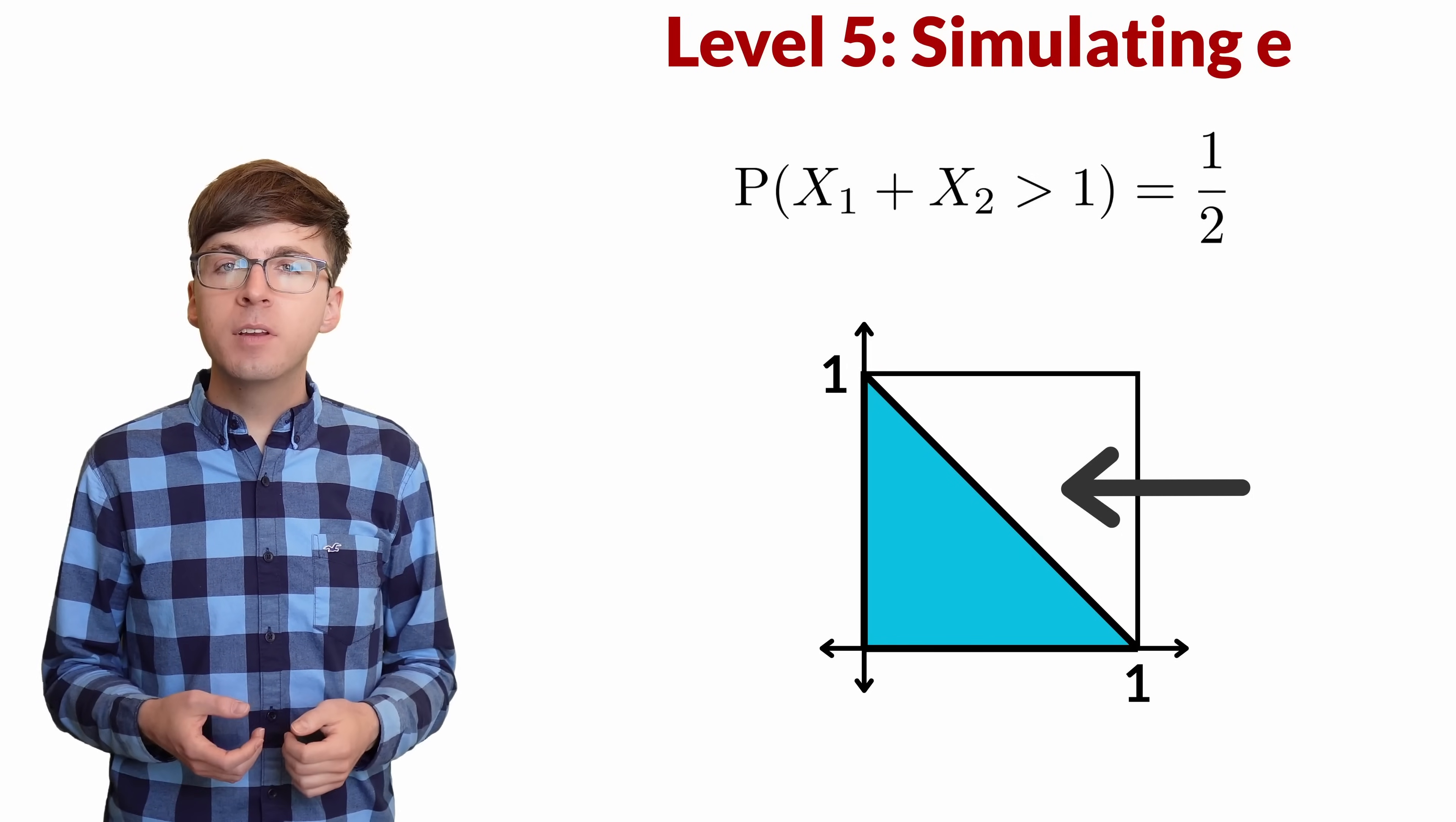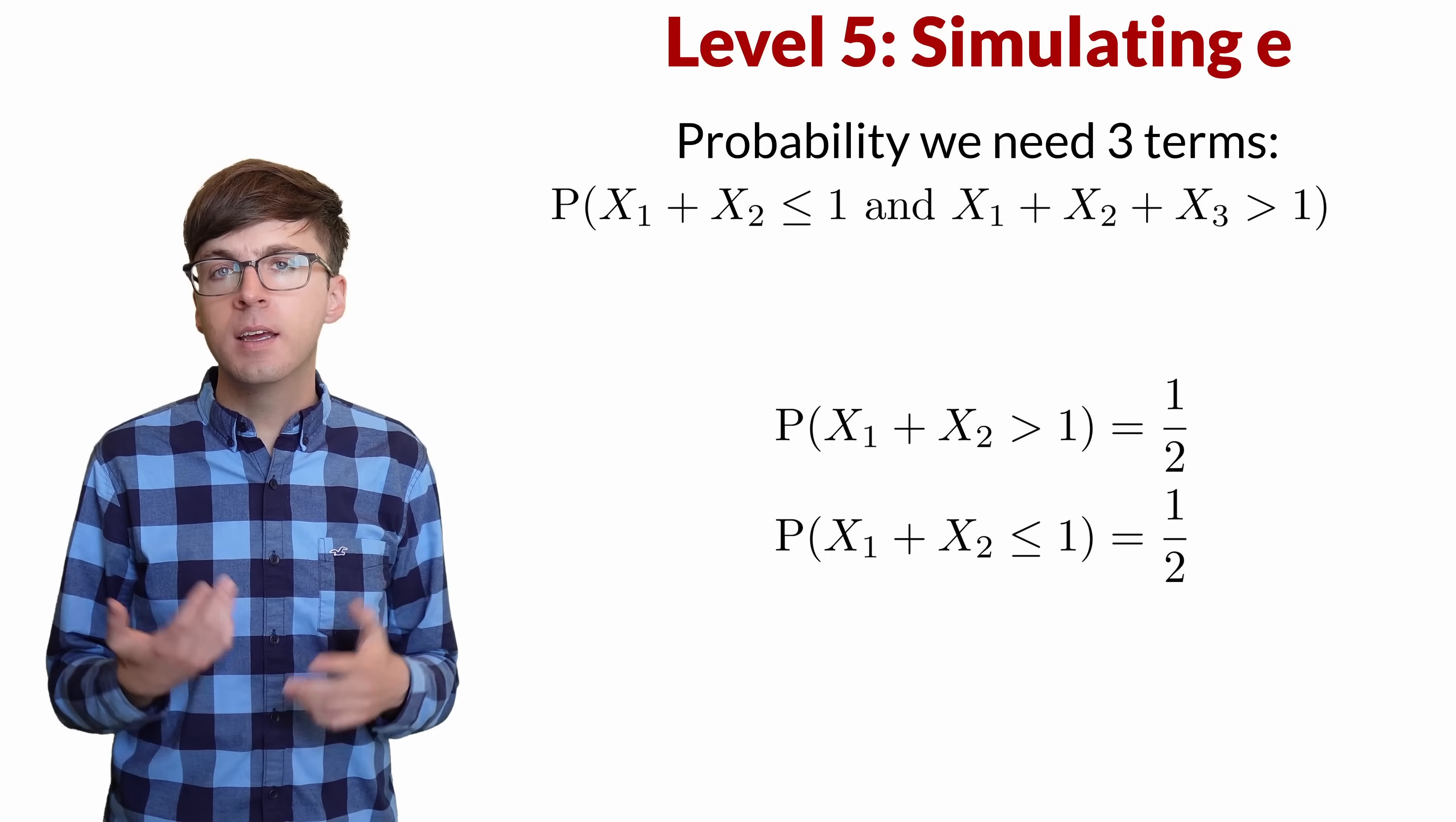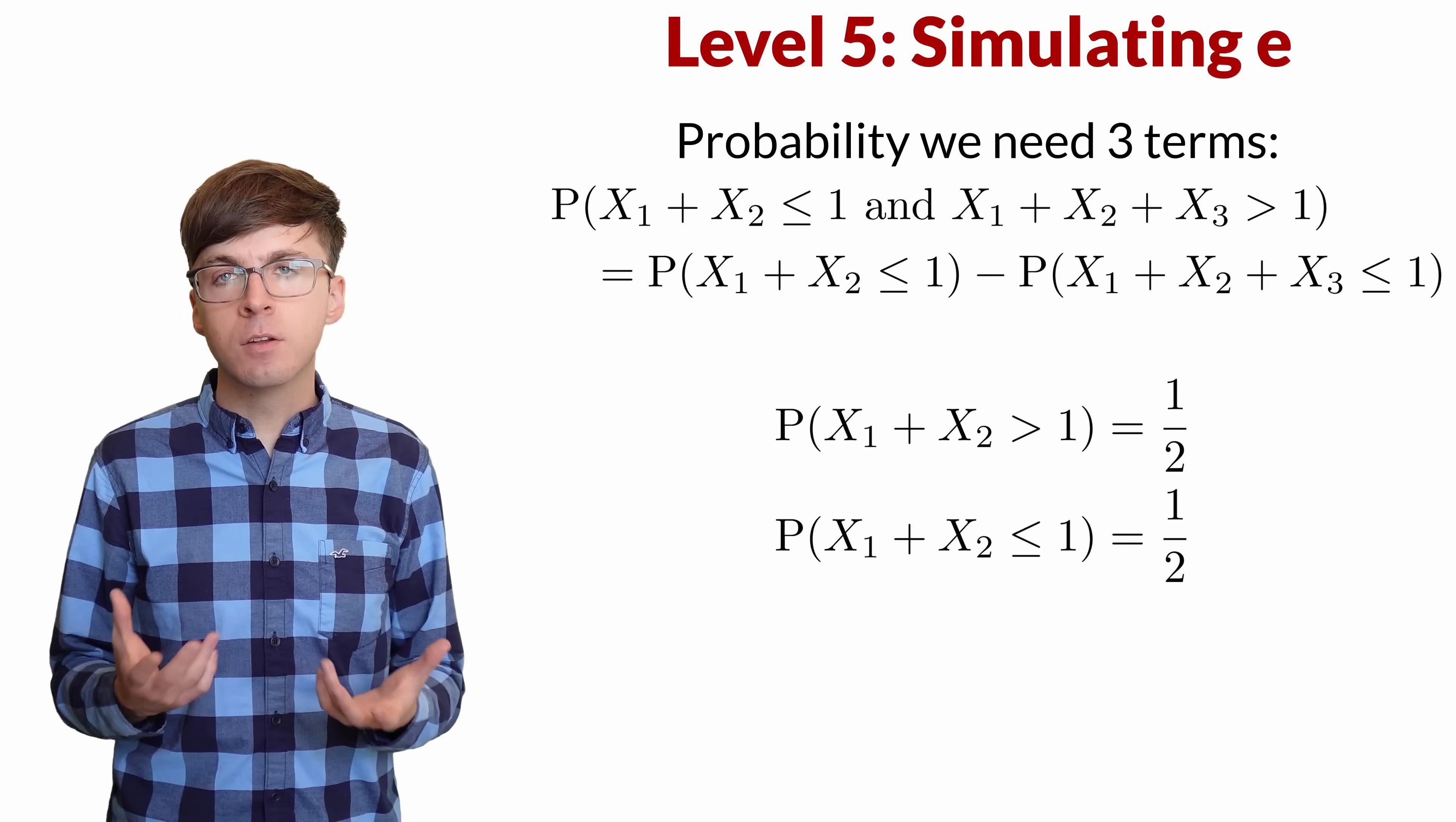What about the probability that we need three terms? This means that x1 plus x2 is less than or equal to 1, and x1 plus x2 plus x3 is greater than 1. We know the probability that x1 plus x2 is less than or equal to 1 is 1 half. Then there's two possibilities. Either the sum of all three of them is also less than or equal to 1, or it's more than 1. We can subtract the part that we don't want, that the sum of the three is still less than 1.